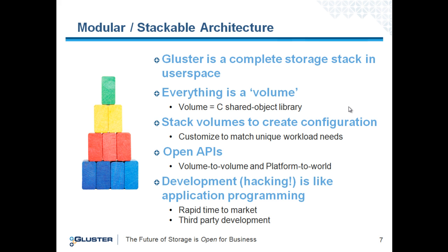A little bit more on the modular and stackable architecture. Gluster is a complete storage operating system that runs entirely in user space. Everything in Gluster is a volume — a volume is a C shared object library, and you combine these volumes together to create your particular file system configuration, matching your unique workload needs to file system options. The APIs allow individual modules to talk to each other and allow outside applications and administrators to interface with the file system. Development is a lot like application programming — a skilled C programmer can build Gluster modules and see the internals of how they work.